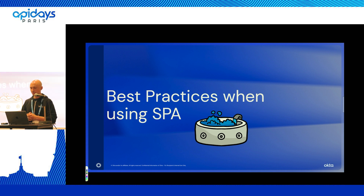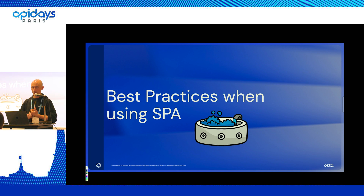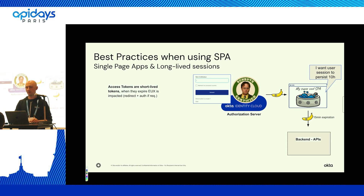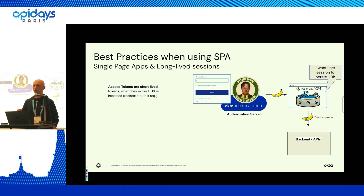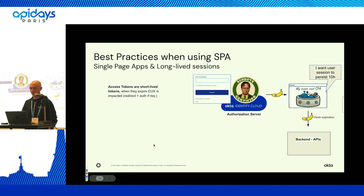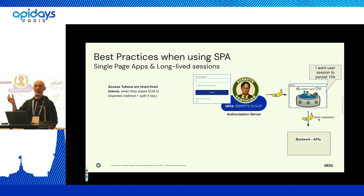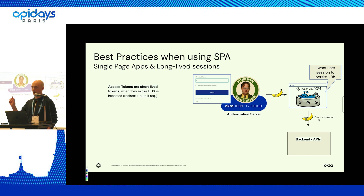We get the token, we validate the tokens. It looks like we are good to go for a nice delivery of a new API project. But then you discover the app being published is a single-page app. Single-page applications are by definition public applications. Public applications store tokens in the public web browser, meaning users or anyone can possibly access the token or there's a risk the token leaks. So we want access tokens with a short time-to-live — if stolen, at least it will expire and limit the threat.